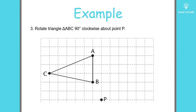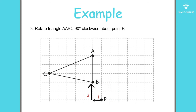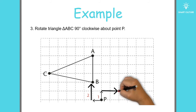Let's take a look at this example: rotate triangle ABC 90 degrees clockwise about point P. The first step is to rotate each point of the figure 90 degrees clockwise about the center of rotation. Point B is one unit to the left and two units above point P. Now let's rotate it by 90 degrees — this will be the image of point B.